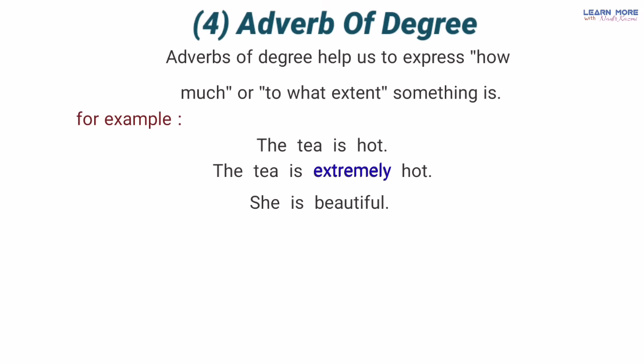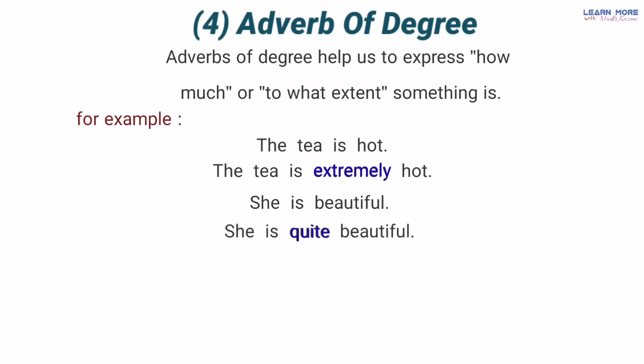'She is beautiful' — woh khubsoorat hai. Is sentence mein 'she' ek pronoun hai subject aur 'beautiful' ek adjective hai jo is pronoun she ko modify kar raha hai ke woh kaisi hai — khubsoorat. Ab dekhen: 'She is quite beautiful' — woh bahut khubsoorat hai. Ab yahan par jo 'quite' hai yeh adverb of degree hai kyunke yeh adjective 'beautiful' ki degree ko badha raha hai — pehle tha ke woh khubsoorat hai, ab hai ke woh bahut khubsoorat hai, yani uski degree badh gayi.